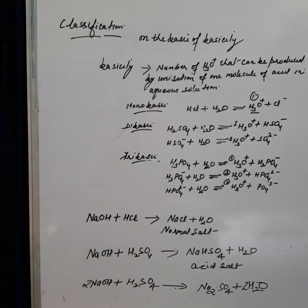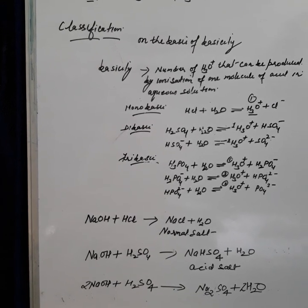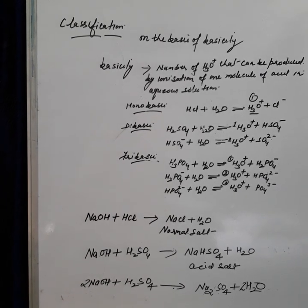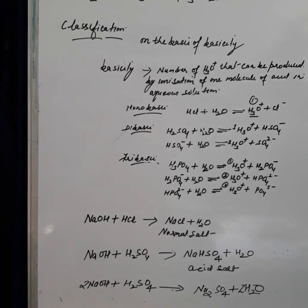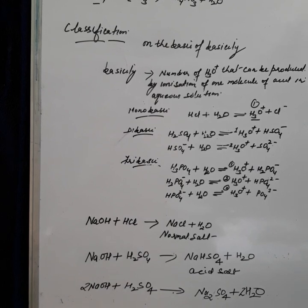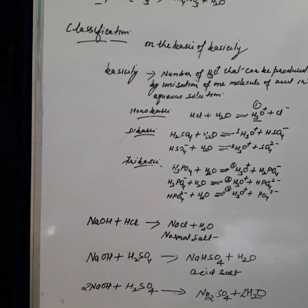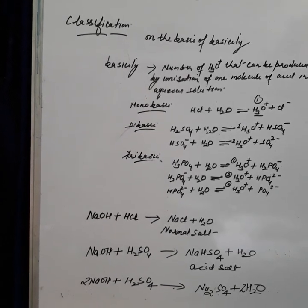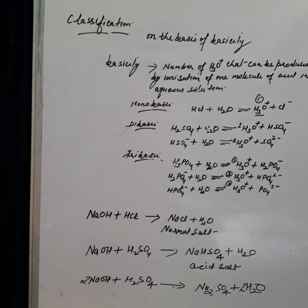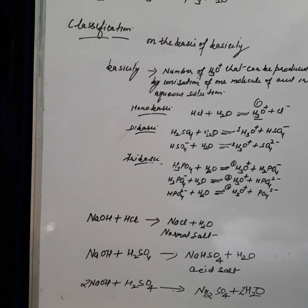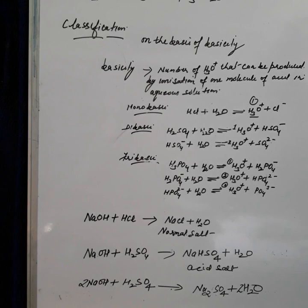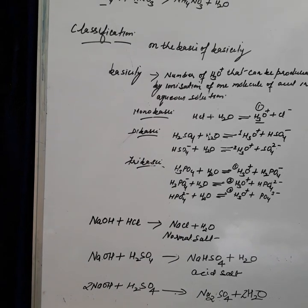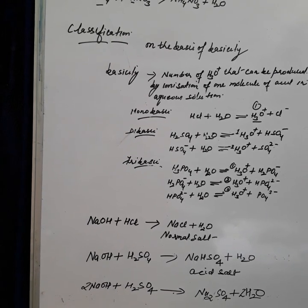The second classification is on the basis of strength. Acids can be classified into strong acids and weak acids. The strength of an acid depends upon the concentration of hydronium ion present in its aqueous solution — the higher the concentration of hydronium ion, the greater the strength. All mineral acids except carbonic acid are strong acids, as they nearly completely ionize in water to form a high concentration of hydronium ion. Examples include hydrochloric acid, nitric acid, and sulfuric acid.